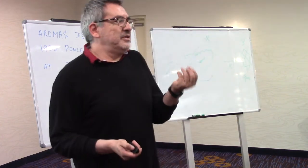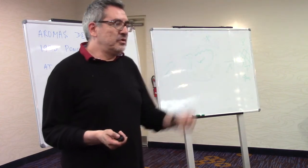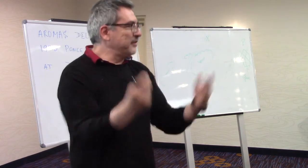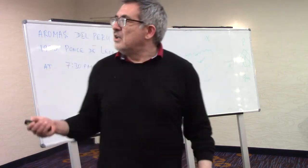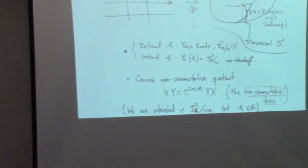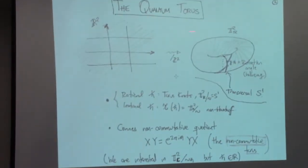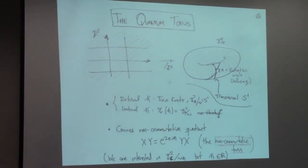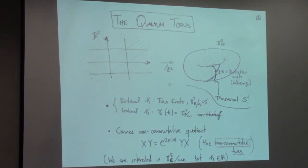Let me try to explain what is the quantum torus, because it is what we are trying to compactify. The quantum torus is obtained traditionally — this is the traditional setting, originally envisioned in the 90s, or late 80s, by Alain Connes.